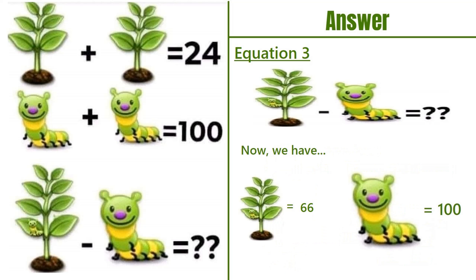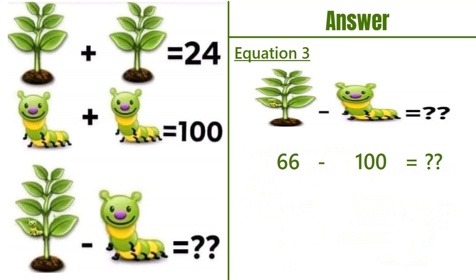So now we have a plant with 8 leaves and a caterpillar equals 66, and 2 caterpillars equals 100. Putting these values in equation number 3, we have 66 minus 100, which equals minus 34. The correct answer to this puzzle is minus 34.